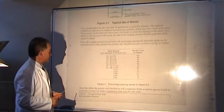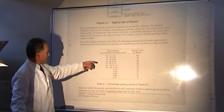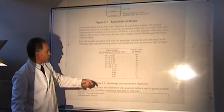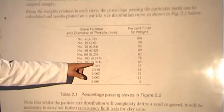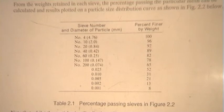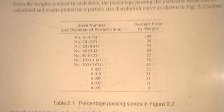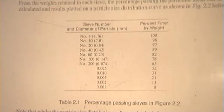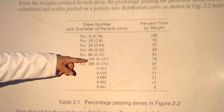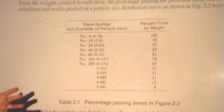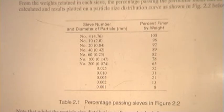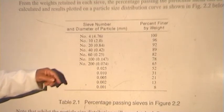Here we can see a table to convert British standard sieve numbers to aperture size: number 4 equates to 4.76 mm, number 60 to 0.25 mm, and number 200 to 0.074 mm, which is very close to 0.075 mm. The smallest sieve in our mechanical analysis was the number 120, which approximates to 0.12 mm — still larger than the number 200 sieve.